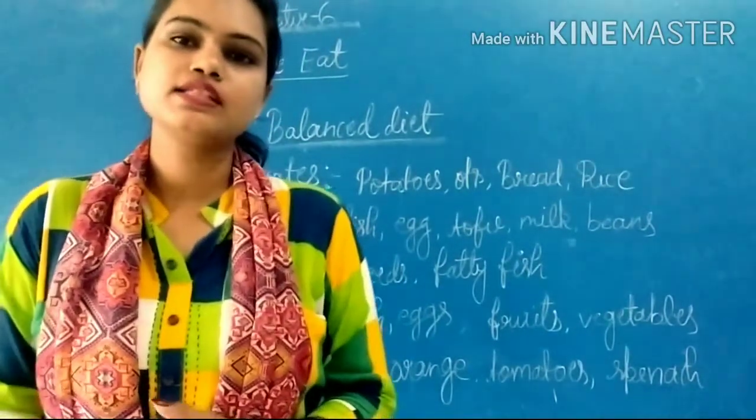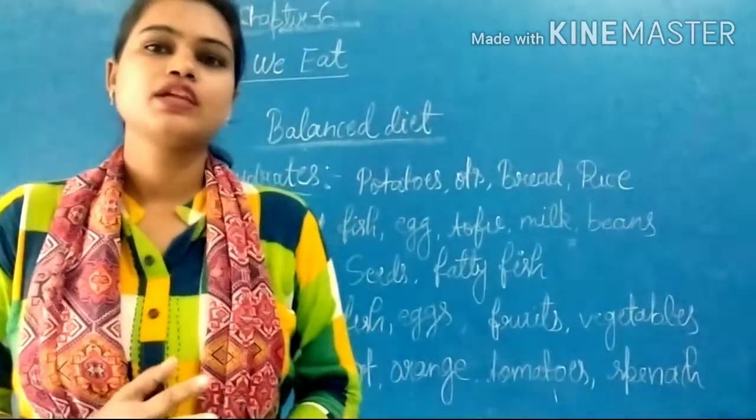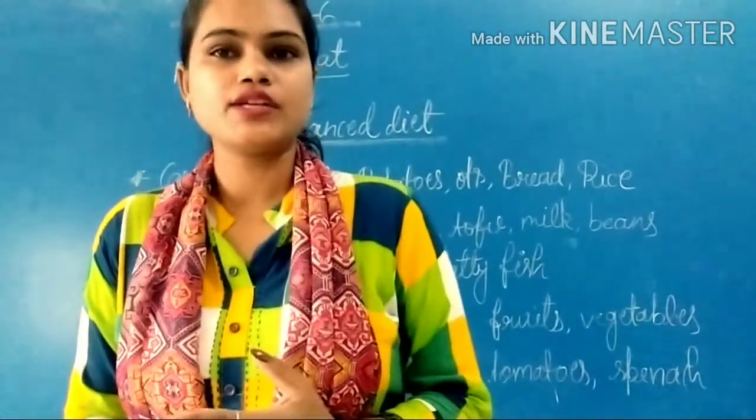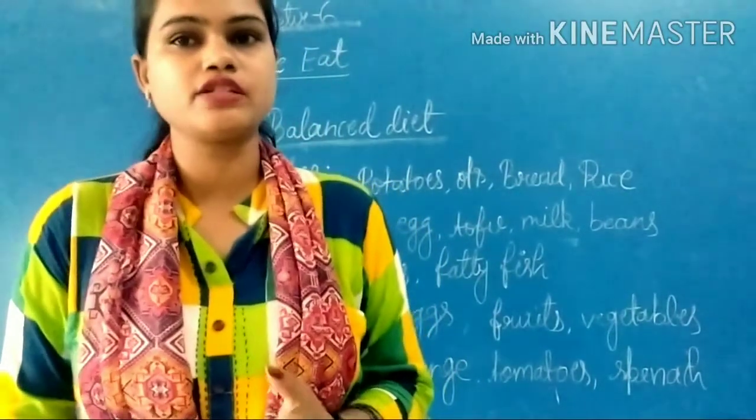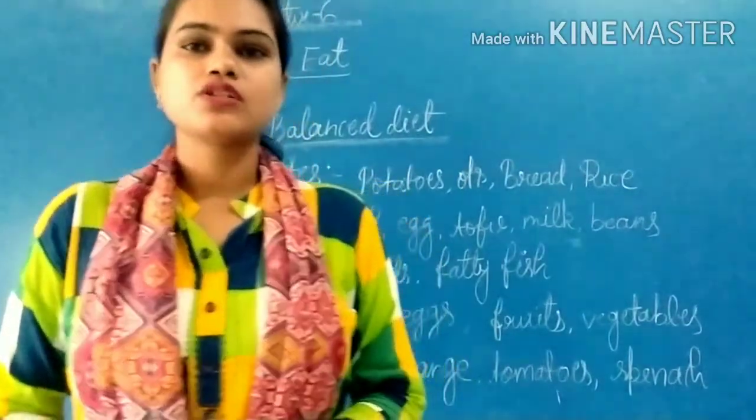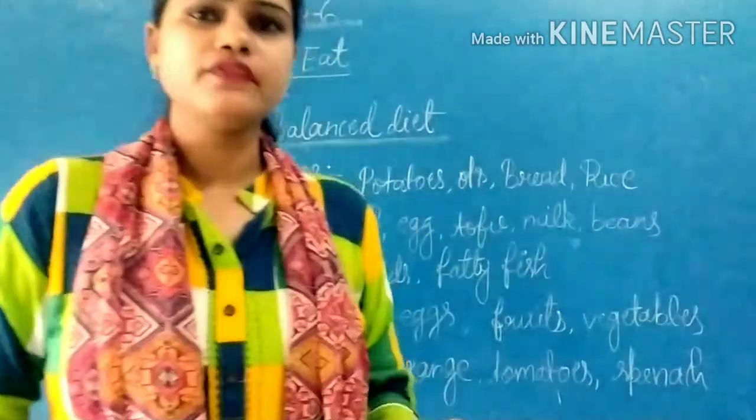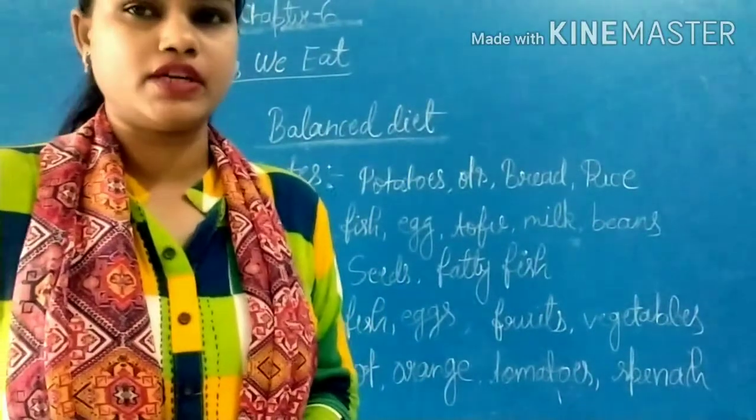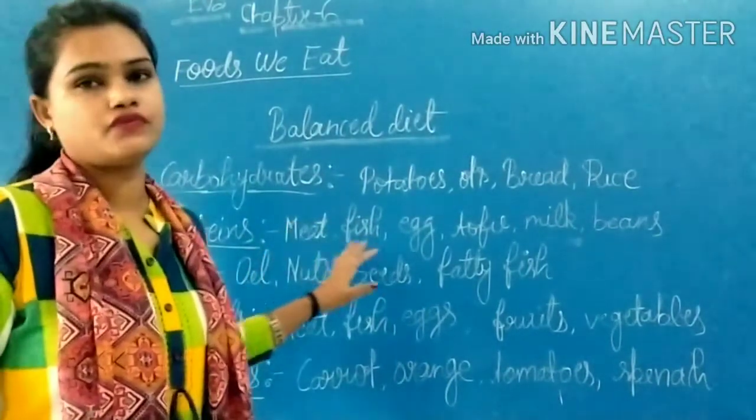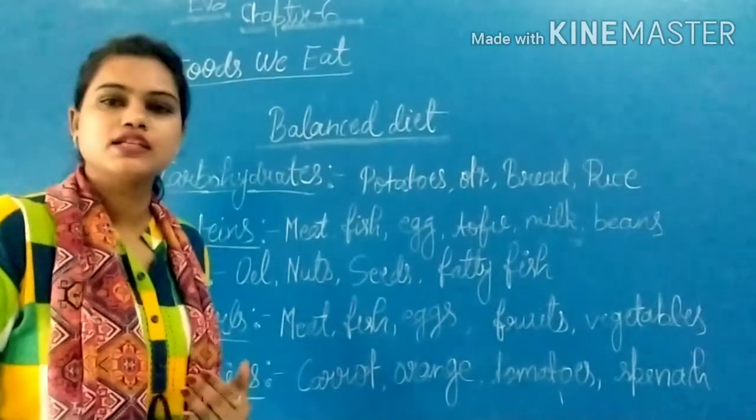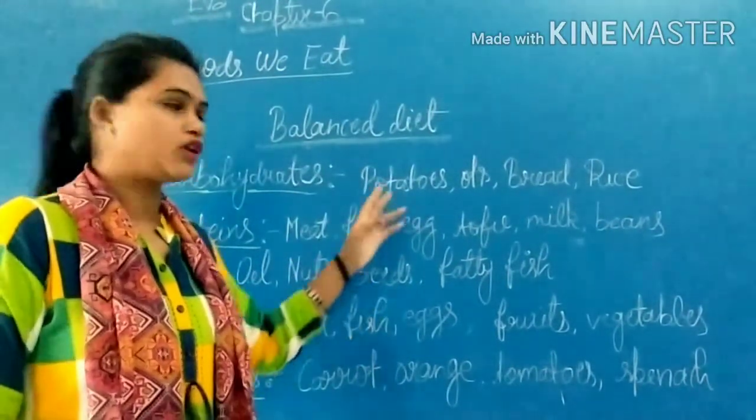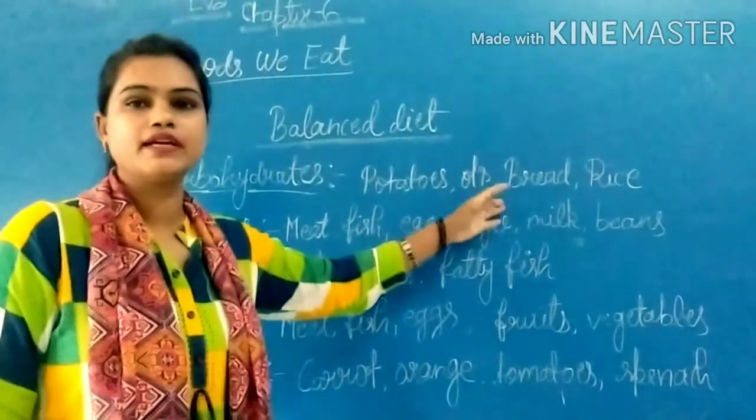Nutrients. What are nutrients? Nutrients are the food which contains carbohydrates, fats, minerals, vitamins. All these things are called nutrients. So let's discuss one by one. First one is carbohydrates. The food from which we get energy is called carbohydrates. Examples of carbohydrates are potatoes, oats, bread, and rice.